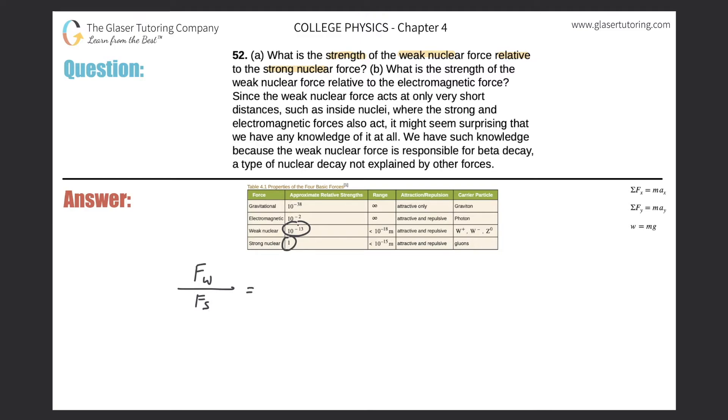So the weak nuclear force is 10 to the minus 13. The strong is one. These are relative strengths. So therefore, dividing it by one is the same as itself. So this would be the relative strength of the weak nuclear force relative to the strong. So that takes care of letter A.